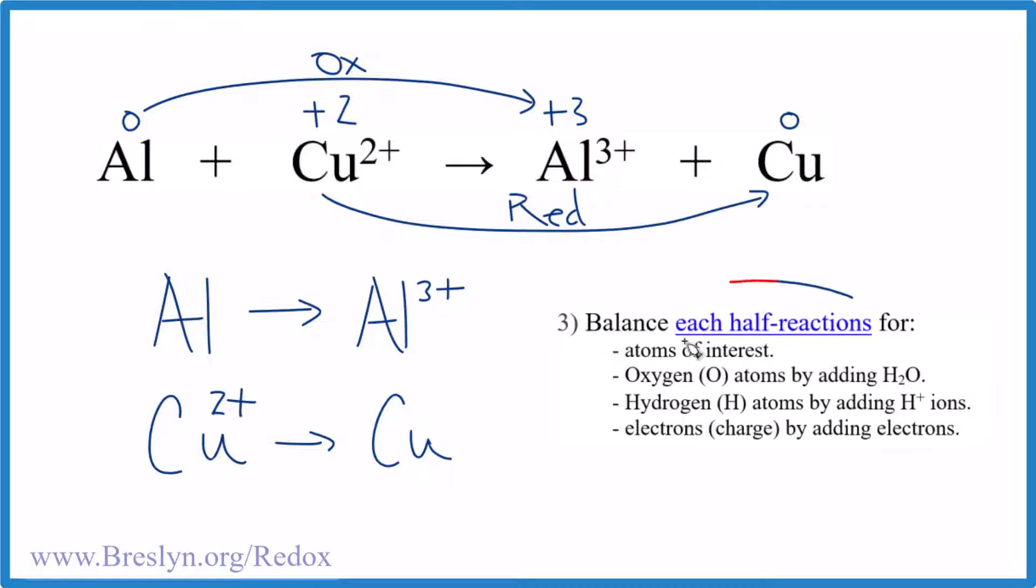So now we need to balance each half reaction for the atoms of interest, oxygen, hydrogen, and then charge. So here, we have aluminum and aluminum, that's balanced. Copper, copper, those are balanced. Oxygen atoms, we don't have any, and we don't have any hydrogen atoms. So don't worry about that.